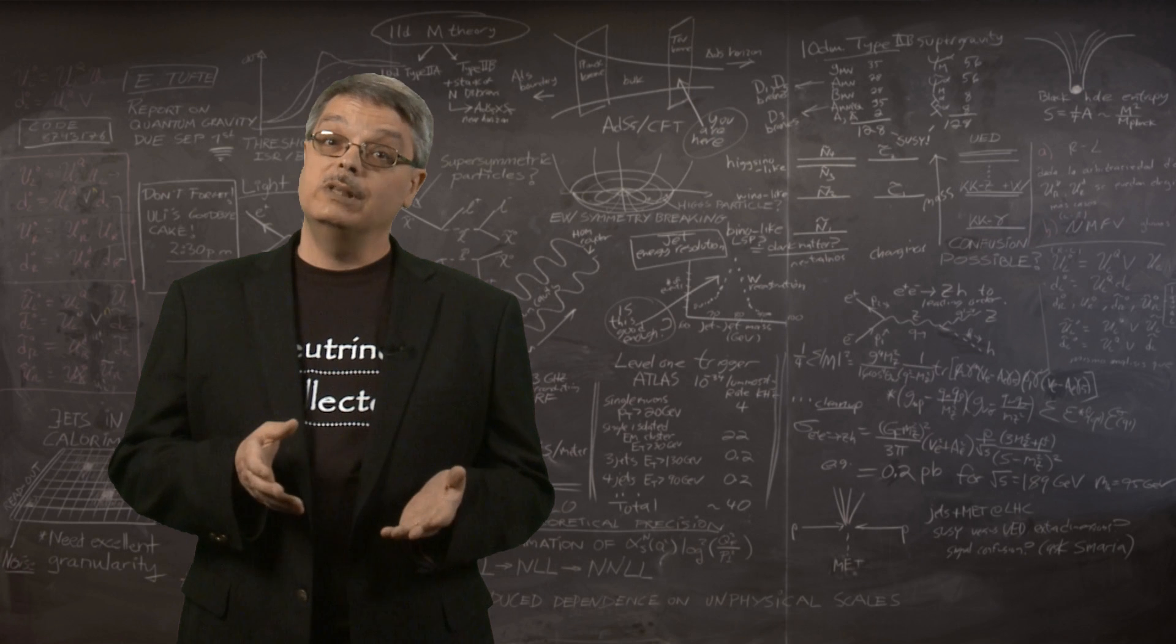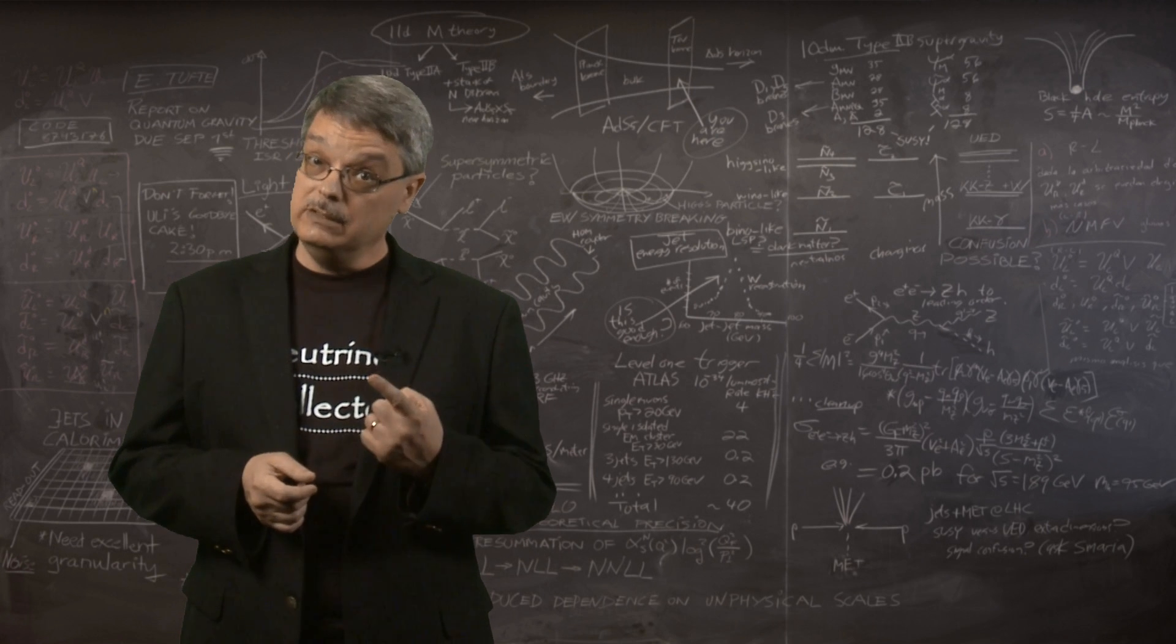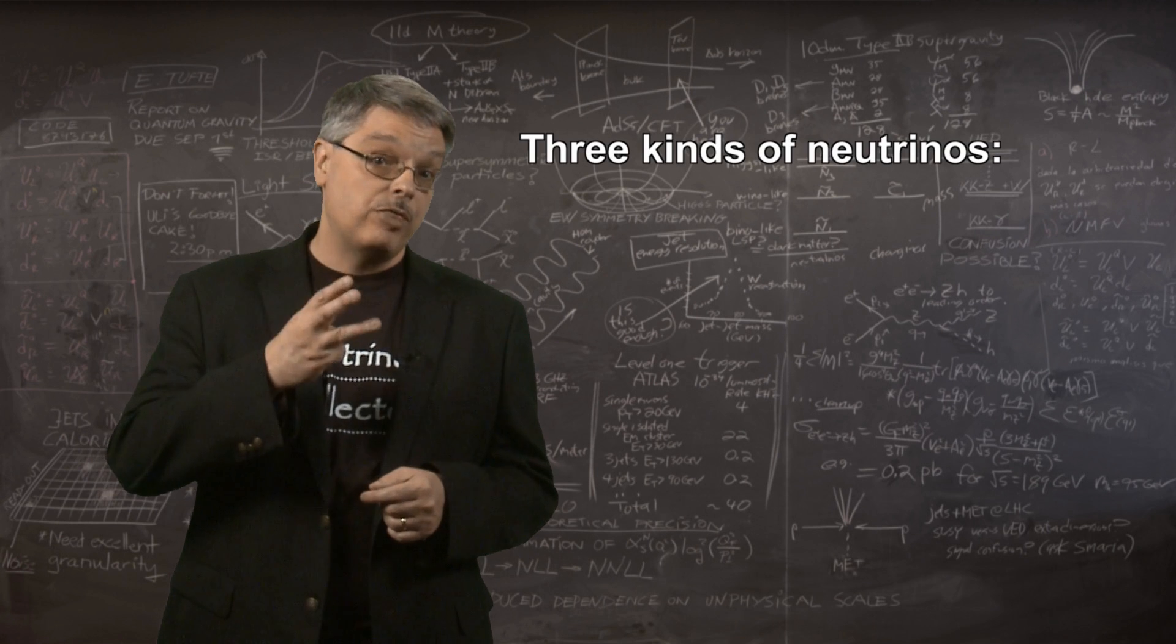For instance, while the original idea of neutrino supposed that there was only a single kind of neutrino, it turns out that there are actually three distinct variants.